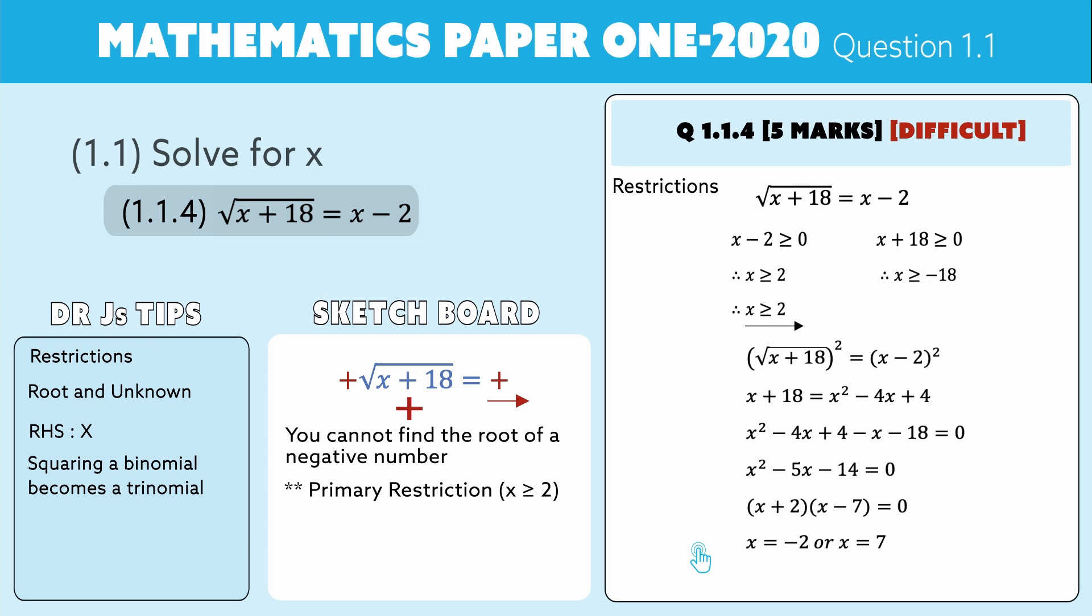The big thing: we have a restriction. Our restriction told us that x must be bigger and equal to 2, so the minus 2, even though it is a solution to this quadratic equation, we're going to exclude that answer and say that x is equal to 7 only because that satisfies the restriction. Let's add that to our list of tips: always check your answer. If there's a square root, you have to check your answer. This is a five-mark question, should not take you more than five minutes to do.